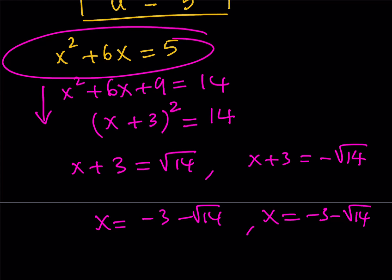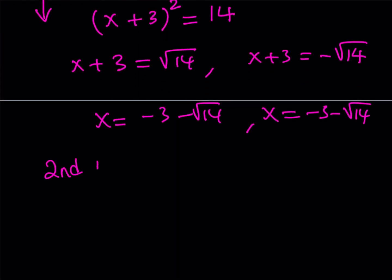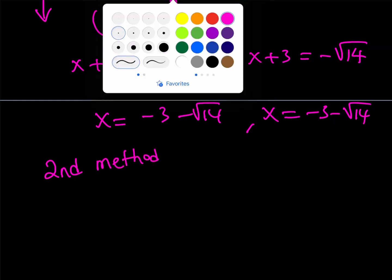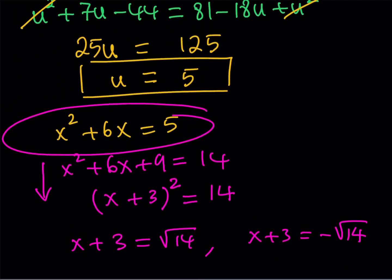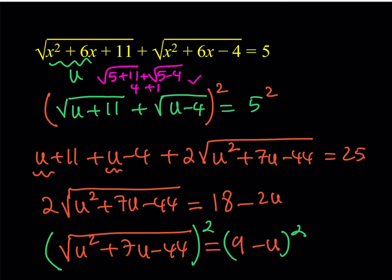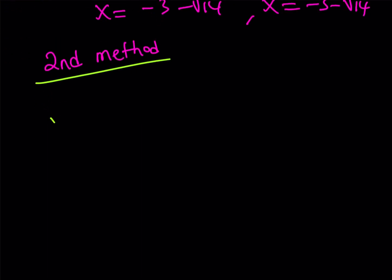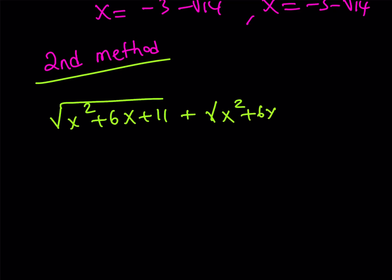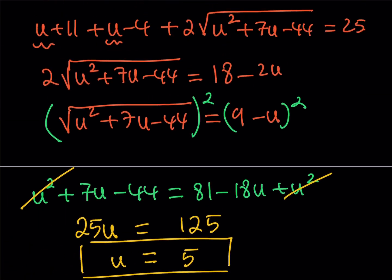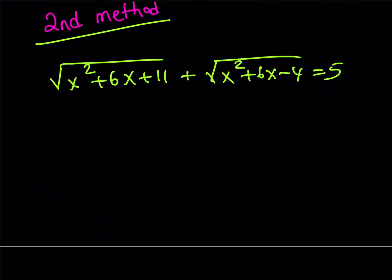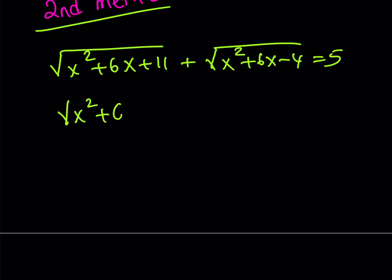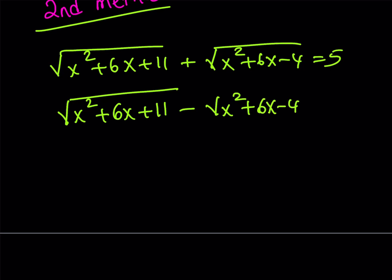Now let's look at the second method, which involves a really cool strategy. We have the square root of x squared plus 6x plus 11 plus the square root of x squared plus 6x minus 4 equal to 5. The second method involves considering the conjugate of this expression. Radicals come with conjugates — we use that in limits and so on. The conjugate of our expression uses the minus sign between the two radicals. We don't know what it equals yet, so let's call it capital A.